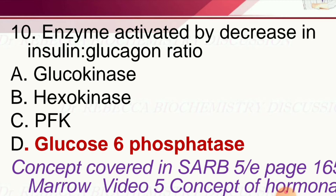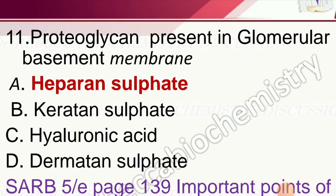Question 10: Enzyme activated by a decrease in insulin-glucagon ratio — options are glucokinase, hexokinase, PFK, and glucose-6-phosphatase. The correct answer is glucose-6-phosphatase.